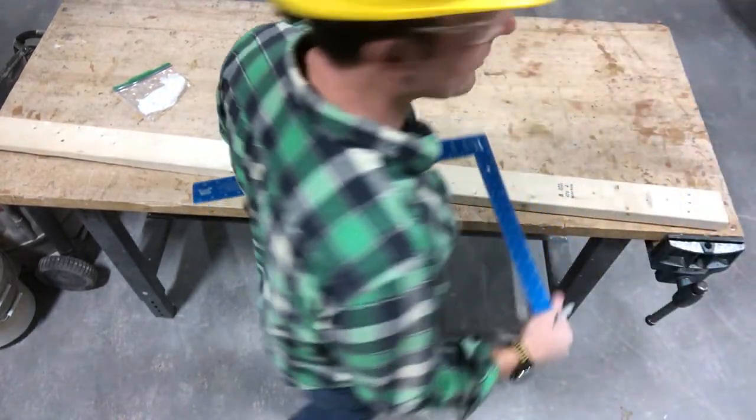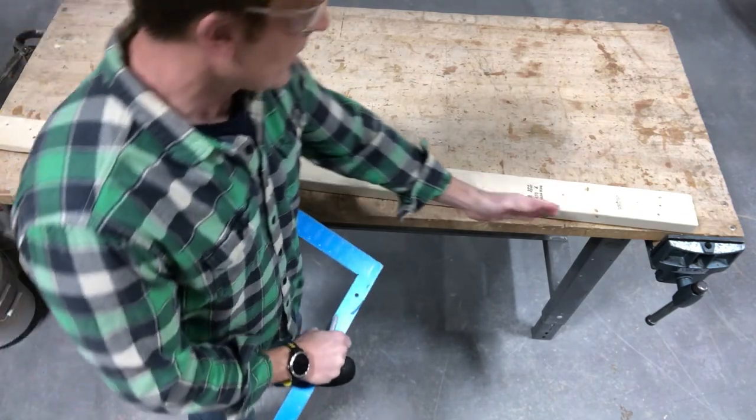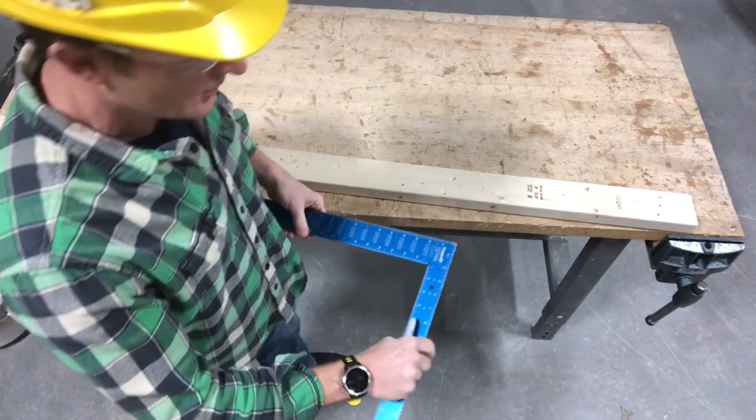And I'm going to put the crown towards me. Because remember, I'm going to be laying this out from the top. This is the top of the rafter, and down inside the building will be on that side.